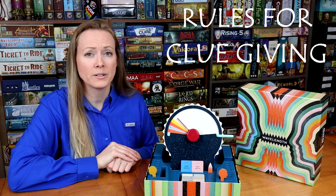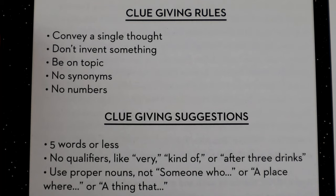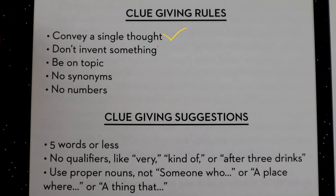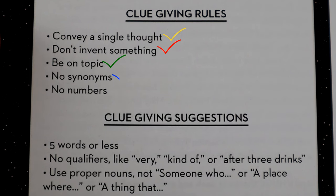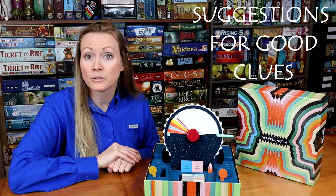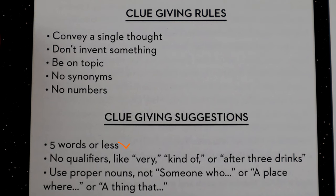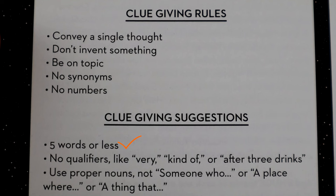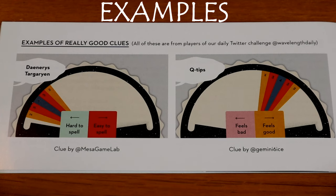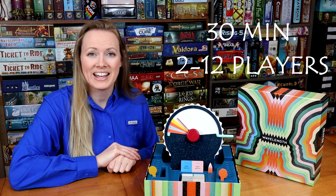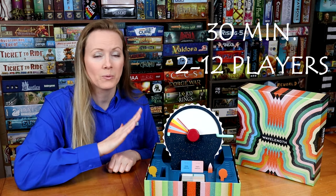When giving a clue, make sure you follow these rules: you must convey a single thought, don't invent something just for your clue, be on topic, don't use the words on the card or synonyms for them, and don't include numbers. Some suggestions for making good clues: be concise and try using five words or fewer, don't include modifiers like always, never, or but, and feel free to use proper nouns. Wavelength takes about half an hour to play and supports up to 12 players with one game box.